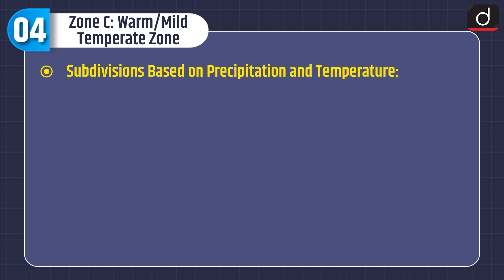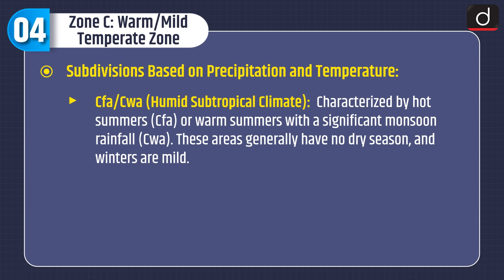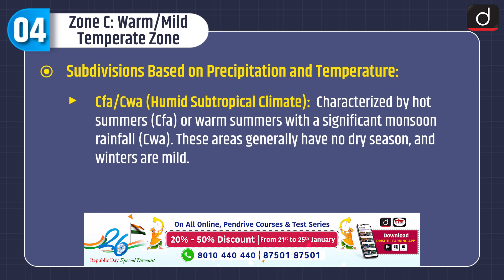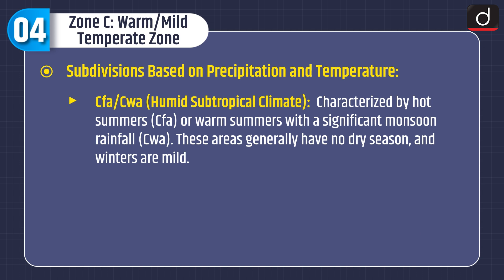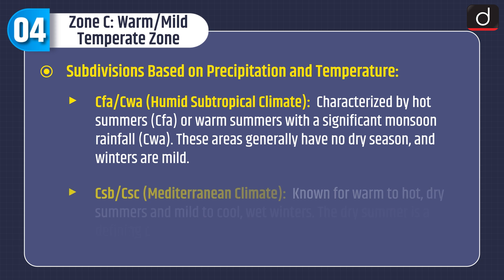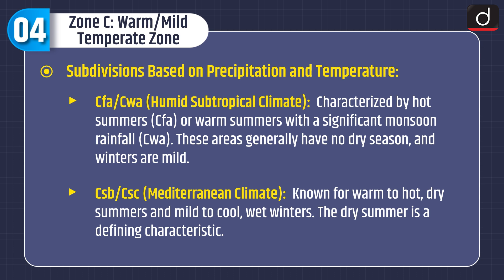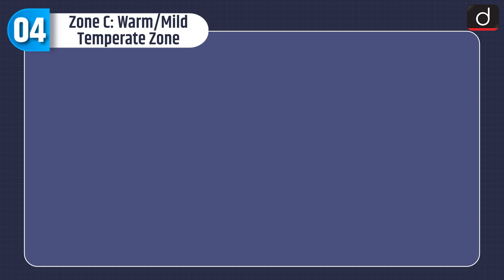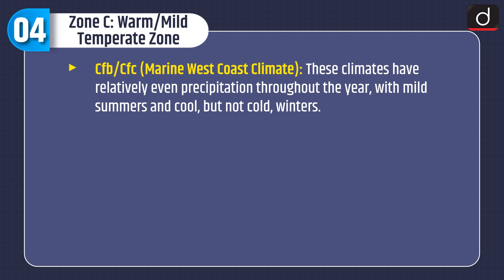Subdivisions based on precipitation and temperature are: CFA and CWA, Humid Subtropical Climate, characterized by hot or warm summers with significant monsoon rainfall, generally no dry season, and mild winters. CSB and CSC, Mediterranean Climate, known for warm to hot dry summers and mild to cool wet winters — the dry summer is a defining characteristic. CFB and CFC, Marine West Coast Climate, with relatively even precipitation throughout the year, mild summers, and cool but not cold winters.